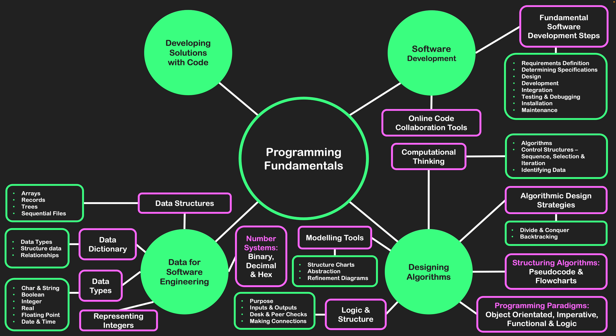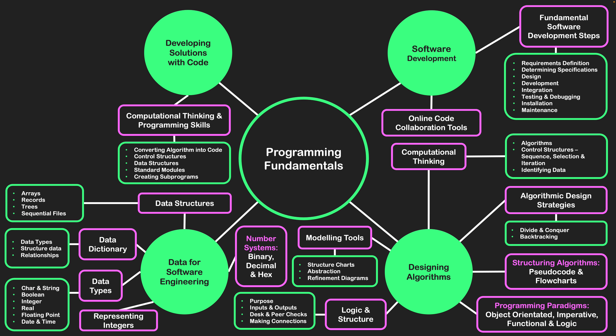The final area of this unit is that of developing solutions with code — the culmination of what we've done. We are now putting the program together. Computational thinking and programming skills are now being used together to start creating the code. We used computational thinking to create our ideas and put them into theory in an algorithm; now we need to turn that algorithm into actual code.